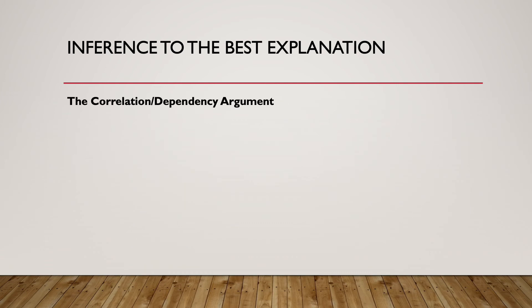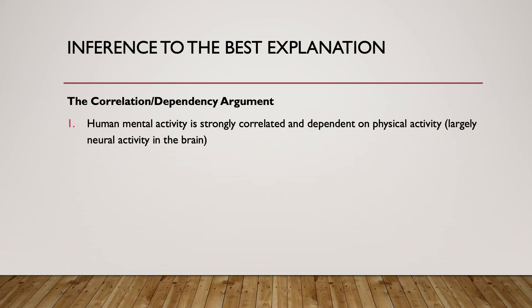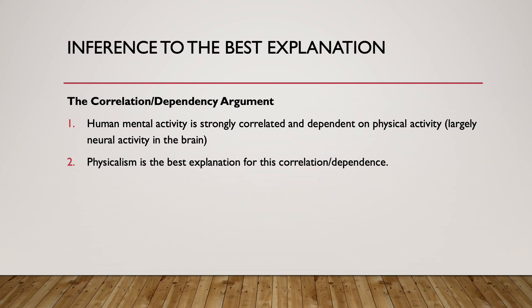This motivates what we might call the correlation or dependency argument. Human mental activity is strongly correlated, as shown by fMRI and EEG studies, and dependent on physical activity — specifically neural activity in the brain. Physicalism seems to be the best explanation for why we see this correlation or dependence: because what's going on in the mind just is this physical activity in the brain, so obviously when one happens, the other will too. Thus, since physicalism gives the best explanation for why we see such a strong correlation, physicalism is probably true.